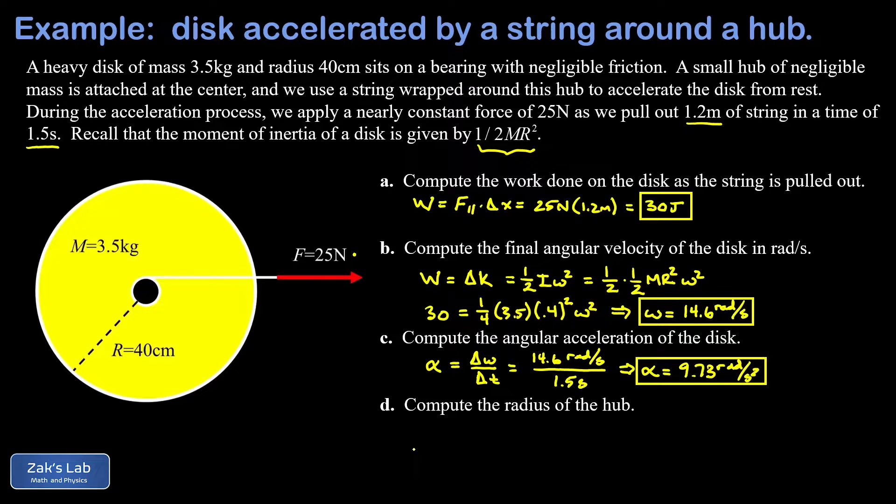Finally, we get to the somewhat unusual part D, where we're asked to compute the radius of the hub. This is something we normally would be given, but in this problem, we're actually finding it. So we have to think about why this would be possible. And it starts with the rotational equivalent of Newton's second law. So the net torque is equal to I alpha, the moment of inertia times the angular acceleration. Well, we're able to compute the moment of inertia. We already computed the angular acceleration.